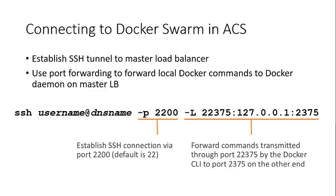To communicate with Docker Swarm, a master virtual machine from the local client establishes an external port-forward to local port 22375, forwarding to port 2375 in the VM via SSH on port 2200. This command works in a terminal on macOS or Linux; Windows users need to use a third-party SSH tool such as PuTTY. The -L switch forwards traffic through port 22375 on the local machine — the port used by the Docker CLI — to port 2375 at the other end. The -p switch instructs SSH to use port 2200 rather than the default port 22. The load balancer you connect to listens on port 2200 and forwards messages to port 22 on the master VM.